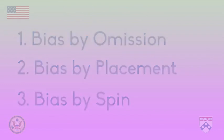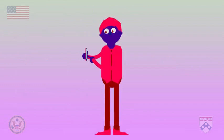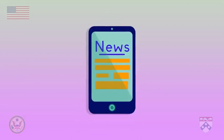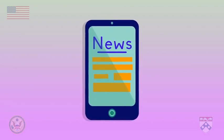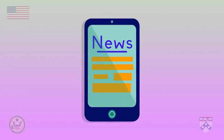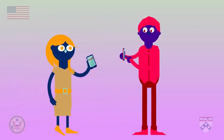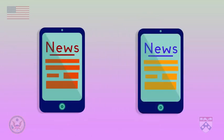This is Adithi. Every morning, she checks the same news website to see what's happening in the world. She likes the way the articles are written, and she feels that she is getting good information. But one day, her friend Ronnie recommends a different news site. When Adithi goes there, she sees some completely different news stories with a completely different point of view.